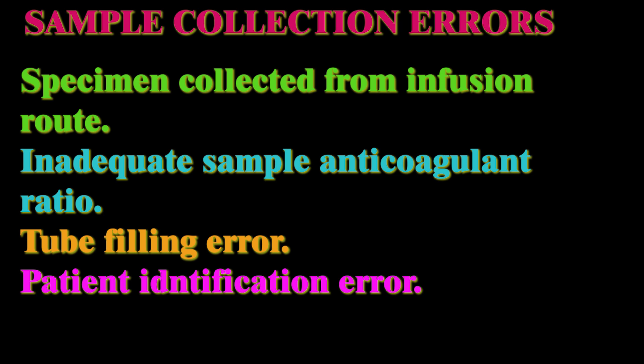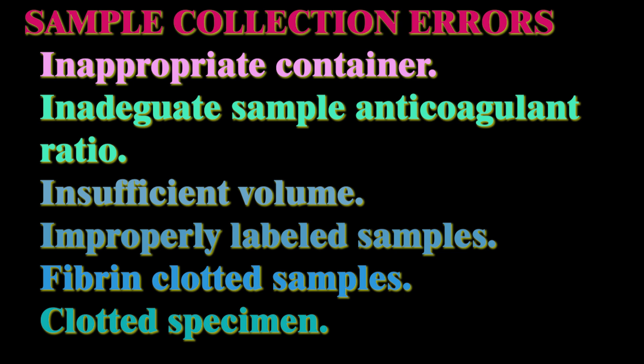Sample collection errors include: inadequate sample-to-anticoagulant ratio, insufficient volume (quantity not sufficient), improperly labeled samples, wrong or missed identification, fibrin clots, contamination by intravenous infusion, clotted specimens, and errors concerning patient identification and misidentification.